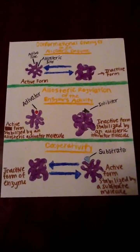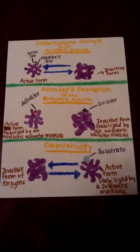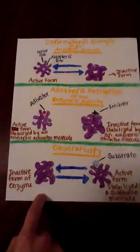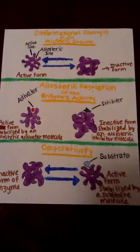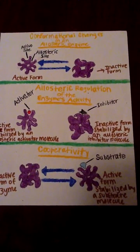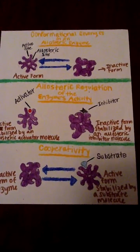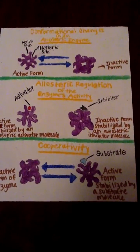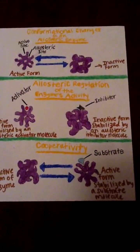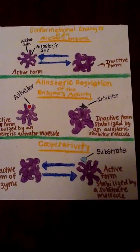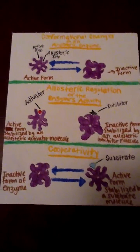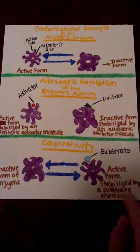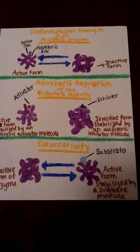Moving to cooperativity down here, we can see that in an enzyme molecule with multiple subunits, the binding of one substrate molecule to the active site of one subunit causes all the subunits to assume their active conformation. You can see the substrate here, and the active form is stabilized by a substrate molecule.